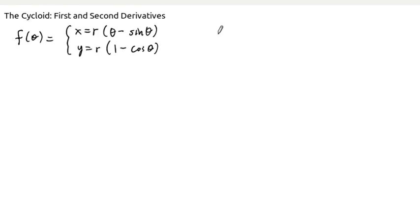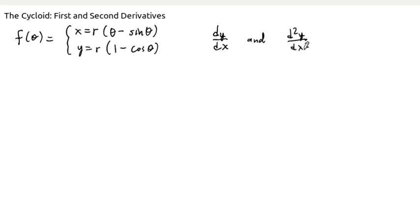What we'd like to do now is compute the slope of the tangent line at each point of the cycloid, and compute the concavity — so d squared y by dx squared. Let's start with the first derivative, the slope of the tangent line.